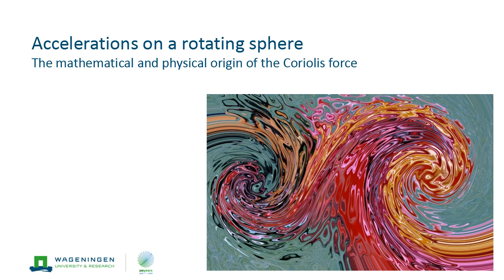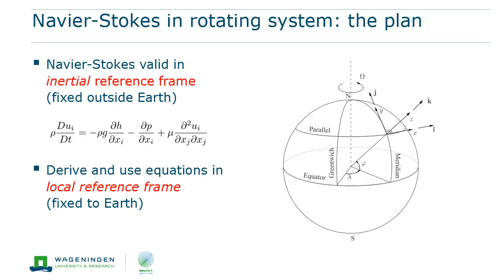In order to understand the motion of fluids on our Earth, we need to understand the effect of the Earth's rotation. The Navier-Stokes equations that we have derived before are valid in an inertial reference frame. They describe how the fluid's velocity field reacts to forces — in particular to gravity, the pressure gradient force, and internal viscous stresses. However, it would be more practical if we could describe fluid flow in a reference frame that is attached to the rotating Earth. Hence, we must find out what the Navier-Stokes equations look like in such an Earth-fixed coordinate system.